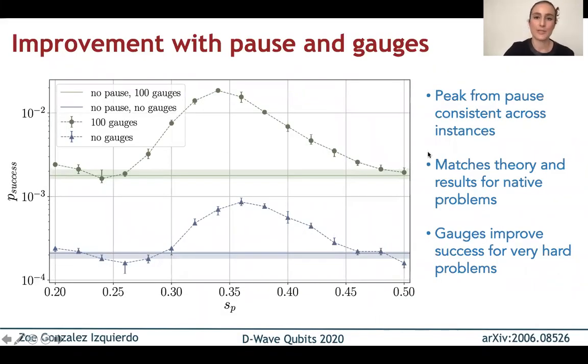So in this plot, we can see how pausing and also gauges can improve our results. The x-axis represents the location of the pause, the y-axis has the probability of success, and then the blue color is used for results with no gauges, and the green color for results with gauges. And then if we look at a single color, for example, green, the horizontal line corresponds to the result without a pause, and then each data point corresponds to a pause at the corresponding location SP.